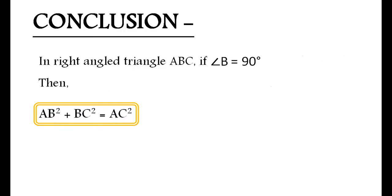So, in right angle triangle ABC, if angle B is equal to 90 degrees, then we get AB squared plus BC squared is equal to AC squared.